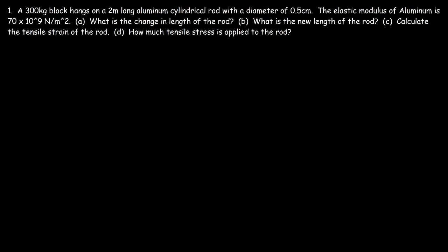Let's consider this problem. A 300 kilogram block hangs on a 2 meter long aluminum cylindrical rod with a diameter of 0.5 centimeters. We're given the elastic modulus of aluminum. What is the change in length of the rod?